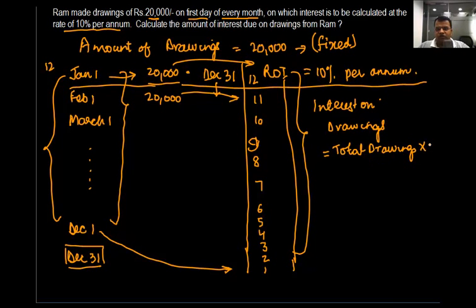Into rate of interest divided by 100, into 6.5 months divided by 12.